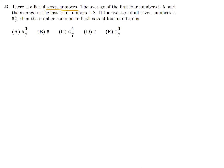There is a list of seven numbers. The average of the first four numbers is 5, and the average of the last four numbers is 8. If the average of all seven numbers is 6 and 4 sevenths, then the number common to both sets of four is what? Let's label the seven numbers A, B, C, D, E, F, and G.